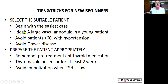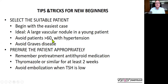It is very important that we select the suitable patient first. We must begin with the easiest case. In my opinion, the ideal case is a large vascular nodule in a young patient, because a young patient means very straight and easy-to-catheterize arteries. A large vascular nodule means that the nodule has large feeders, which are easy to catheterize. You must avoid patients over 60, especially those with hypertension, because in such patients the arteries are very tortuous. And you must avoid Graves' disease in the beginning, because it is difficult to manage these patients preoperatively and postoperatively.